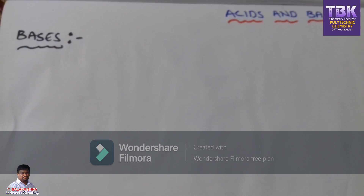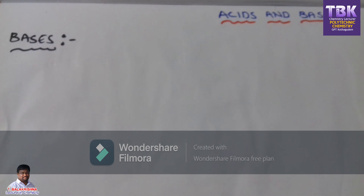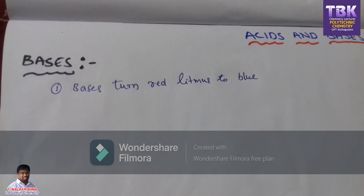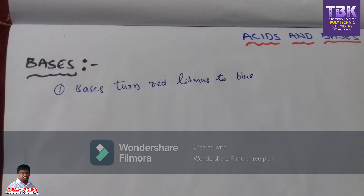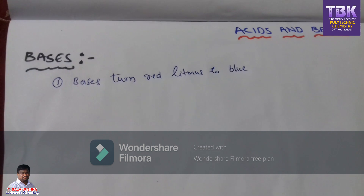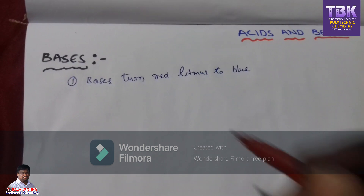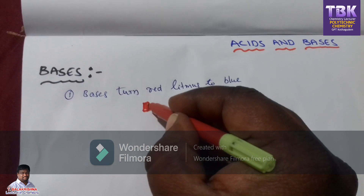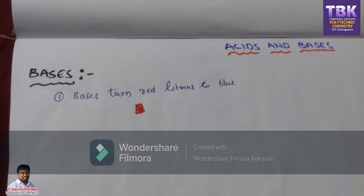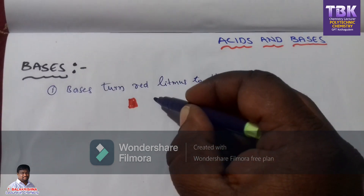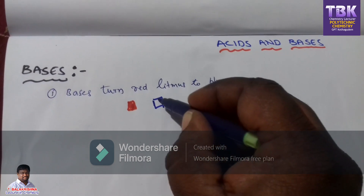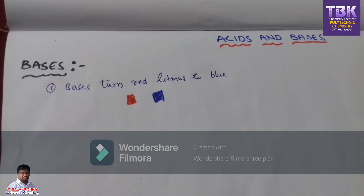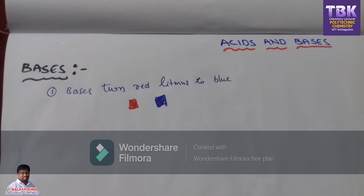Next, properties of bases. The first property of bases is bases turn red litmus to blue litmus. When you add a base to red litmus paper, the red litmus paper is converted to blue litmus paper.